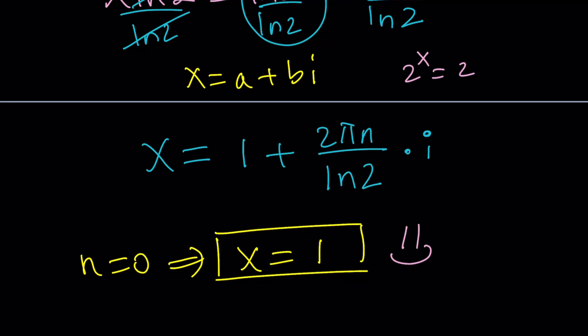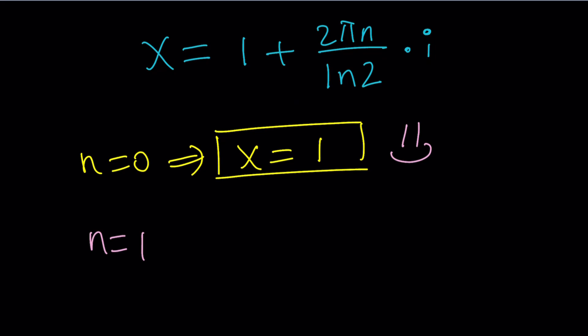For example, if n is equal to 1, you're going to get x equals 1 plus 2 pi over ln2 multiplied by i. And you can actually check that. Go ahead and plug it in here, right?